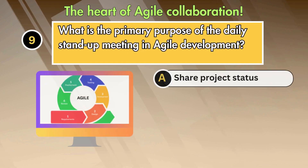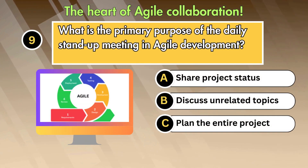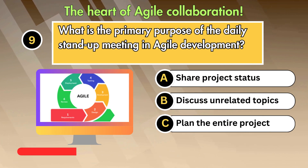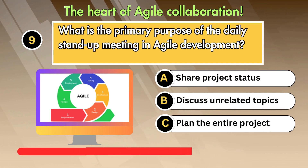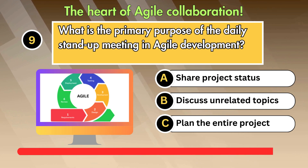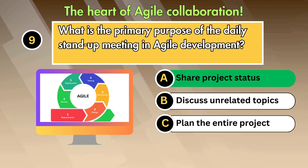What is the primary purpose of the daily stand-up meeting in agile development? Option 1: Share project status. Option 2: Discuss unrelated topics. Option 3: Plan the entire project. Answer is Share project status.